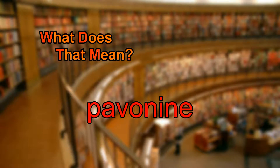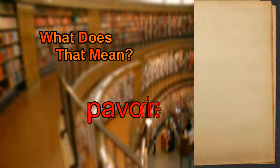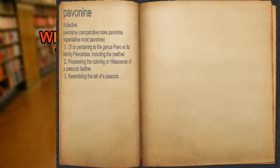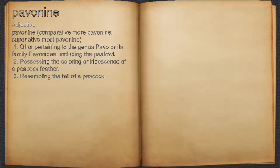What does Pavonine mean? Pavonine. Adjective. 1. Of or pertaining to the genus Pavo or its family Pavanidae, including the pea-fowl.